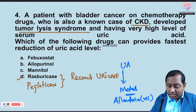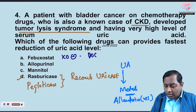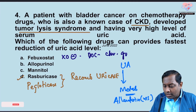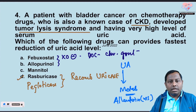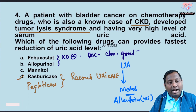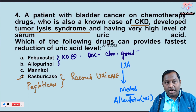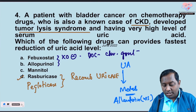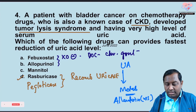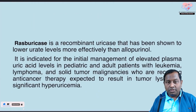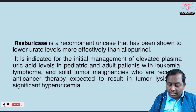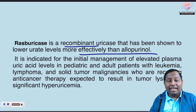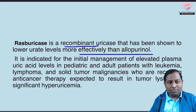Febuxostat is a xanthine oxidase inhibitor and the drug of choice in chronic gout; allopurinol is also a xanthine oxidase inhibitor and is preferred first. If allopurinol is ineffective or not available, febuxostat can be used. Mannitol has no role in this scenario. Rasburicase is faster and more effective than allopurinol at reducing uric acid, as confirmed in Goodman & Gilman.